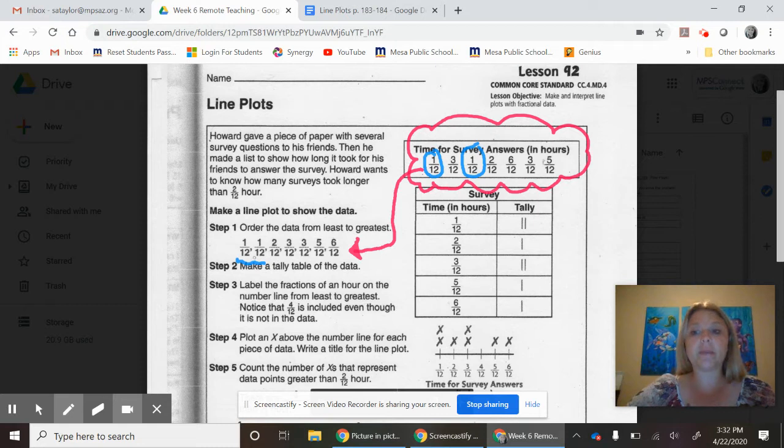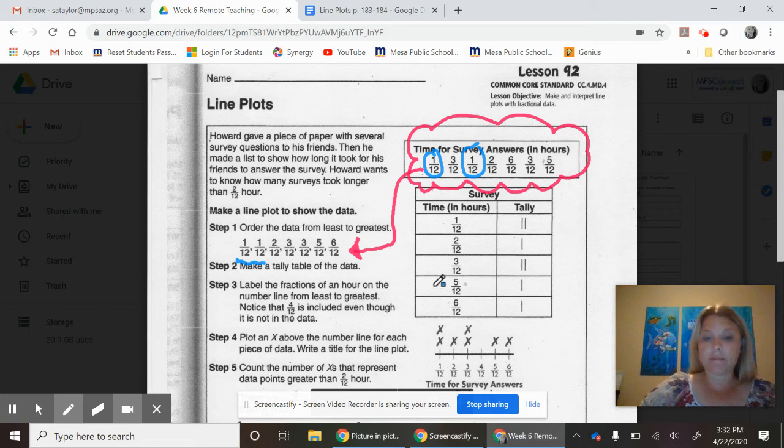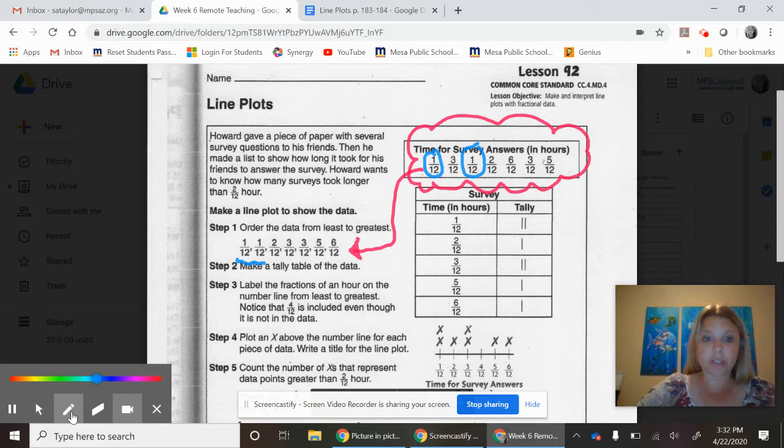You are going to be sure that you list it twice on your document when you're listing them in order. Don't forget that step - make sure you include every one of them. If it's more than one, include it. Then you're going to start tallying how many took this time.